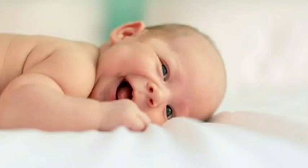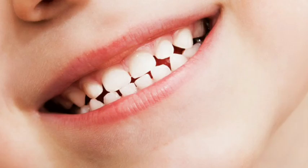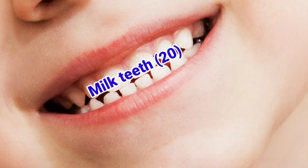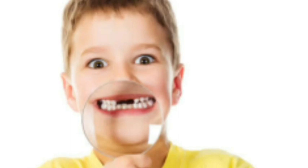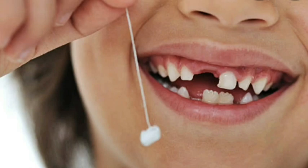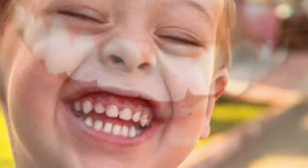Teeth also help us to speak clearly. A newborn baby does not have any teeth. It starts developing teeth when it is 6 months old. This first set of teeth is called the milk teeth. Milk teeth are about 20 in number. Between the age of 7 and 11, the milk teeth begin to fall one by one. Hence, the milk teeth are also called temporary teeth. New teeth start growing in their places. By the age of 12, a child has 28 teeth. These are called permanent teeth.